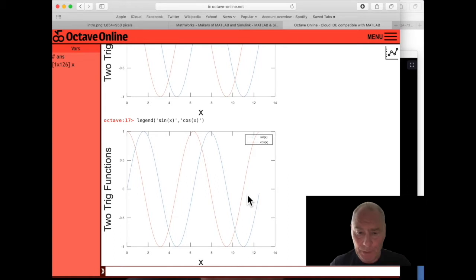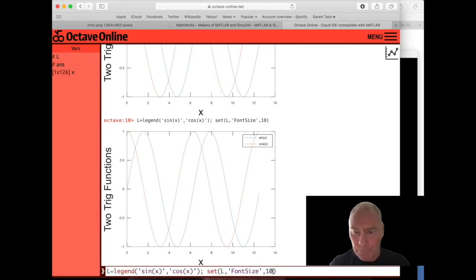It's a little bit small. Well, unfortunately, to get a bigger font size here, it's a little bit more complicated. We do it like this. Use up arrow and put an L equals in front of that legend command. Semicolon. And now type set L, quotes font size. And I'm going to choose, well, I think 10 will be different. Yeah, let's go for 10. It's a bit small, isn't it? Let's go for 15. Now that's pretty good.